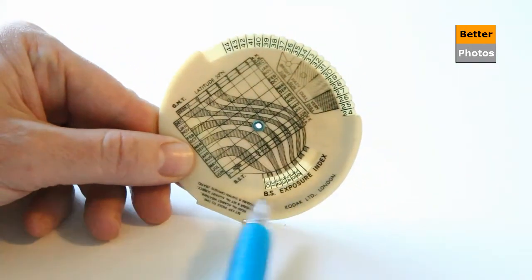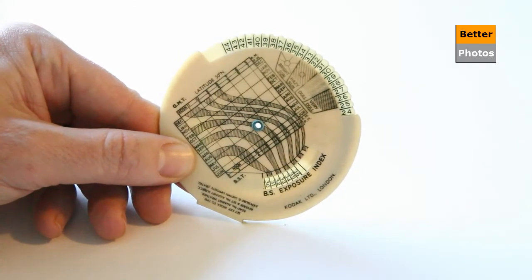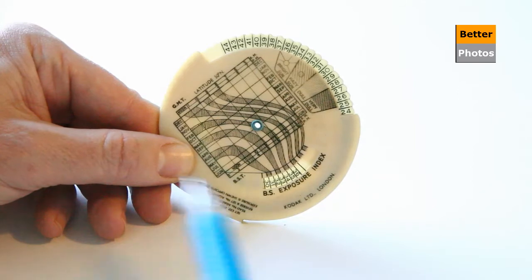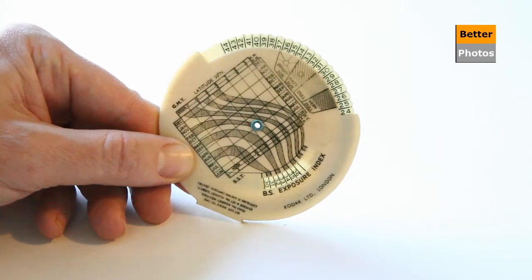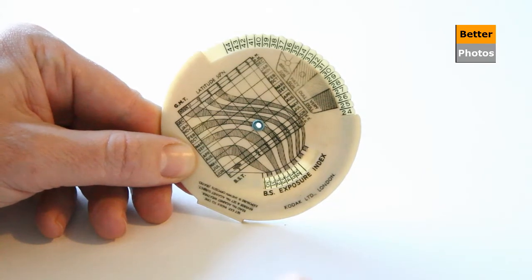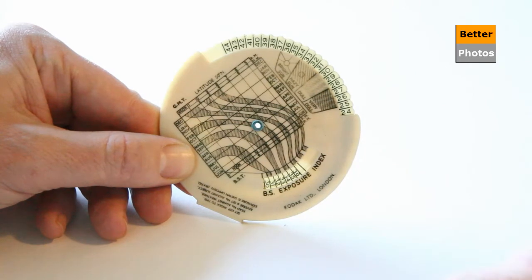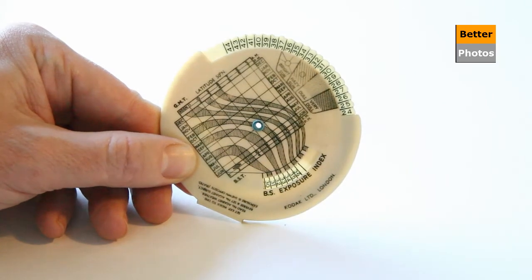Now when I first looked at this I was a little bit confused because I couldn't see any references to film speed that I recognized and subsequently found out that this BS index, British Standard Index, related to film speed. But just to give you a little clue, 31 ties up with a film speed of 100, 34 ties up with a film speed of 200.